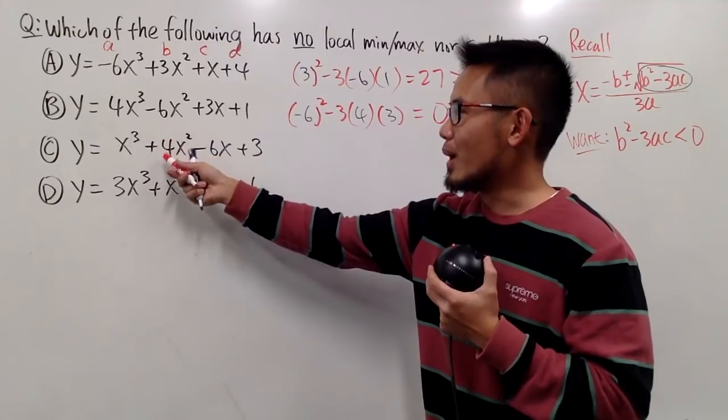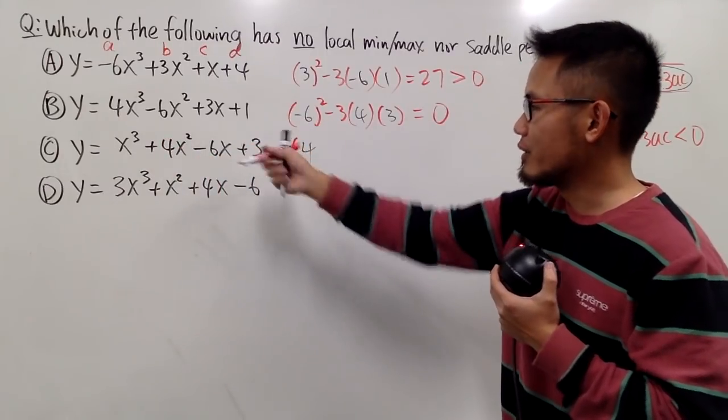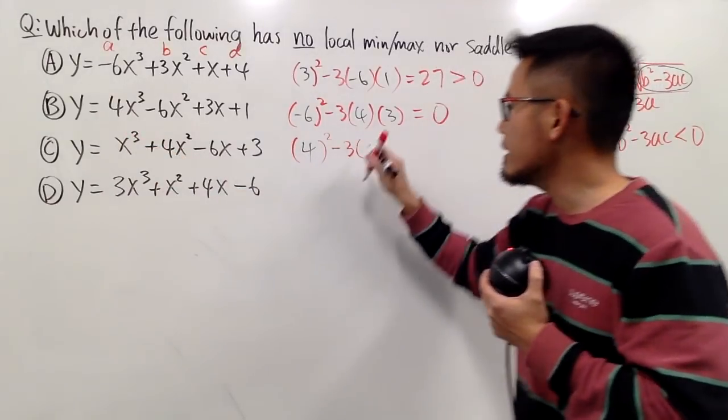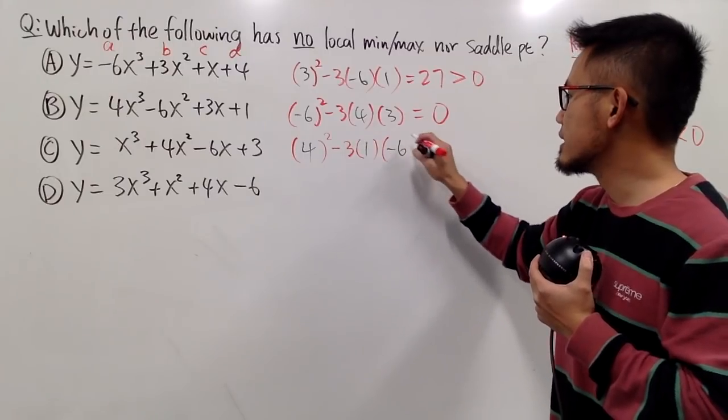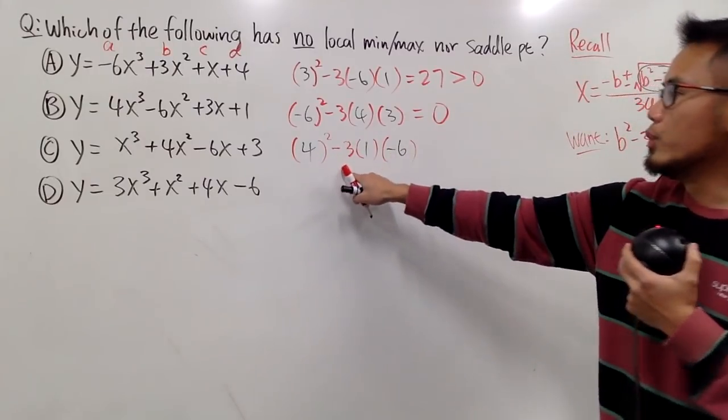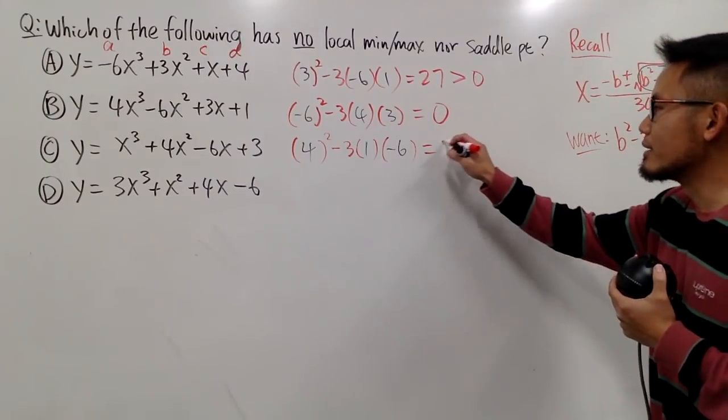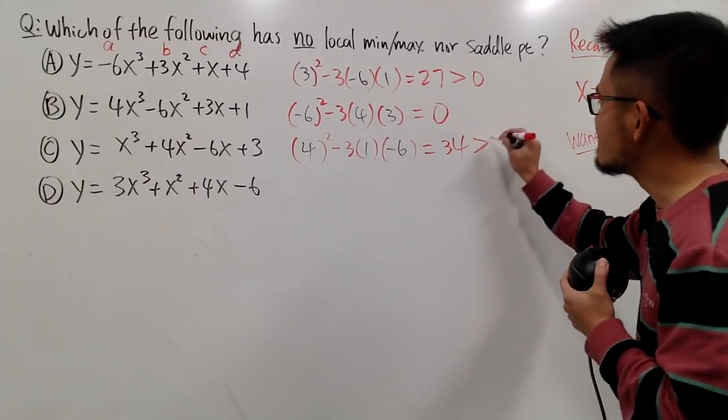Let's do the third one. Let's put out b squared which is 4 squared minus 3 times a which is 1, and then times c which is negative 6. This is 16 and we will add 18 after that, so this is going to be 34. Yes, and this is positive.